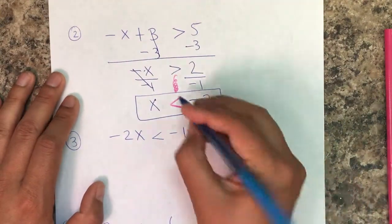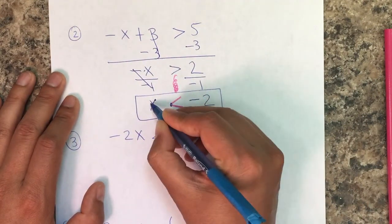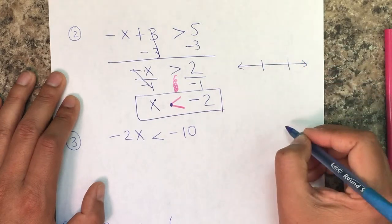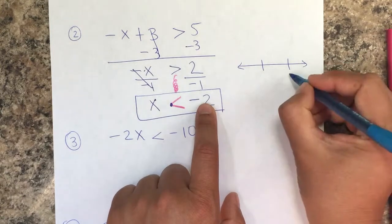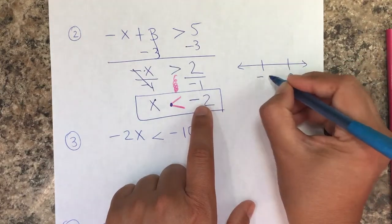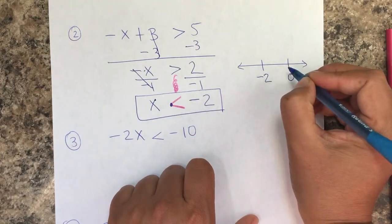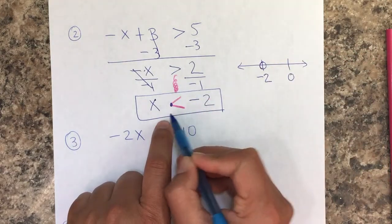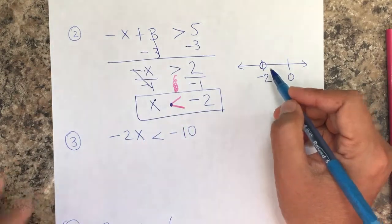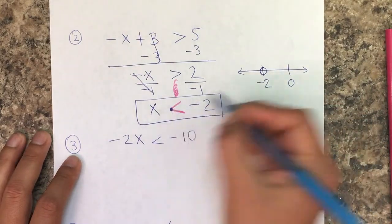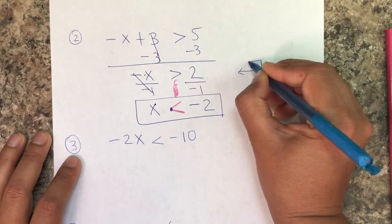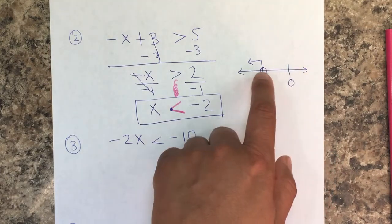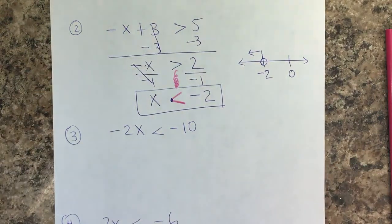For the graph: x is less than negative two. Less than is one dot, so we go to the left. Place zero on the number line, then put negative two to the left. Draw the circle at negative two — it's open because there's no equal sign. Draw the arrow pointing left from the circle.